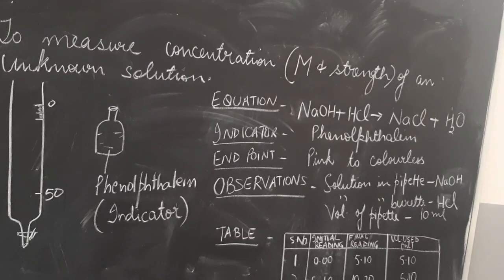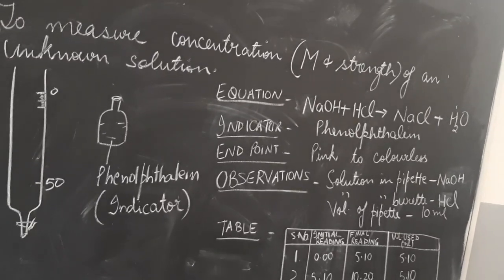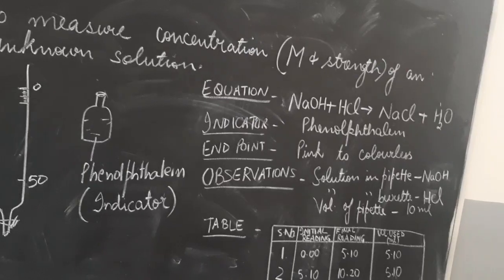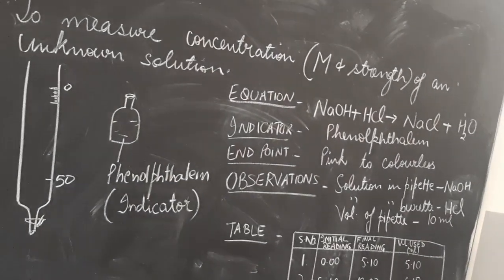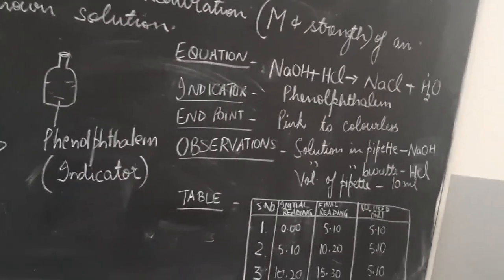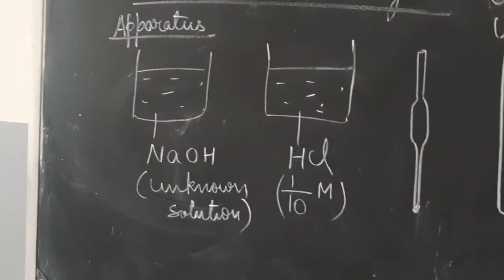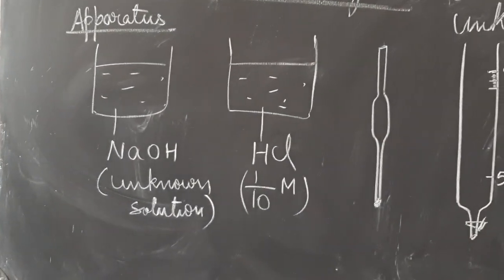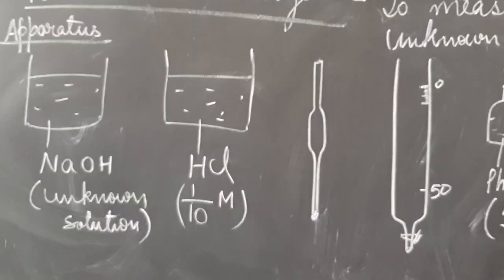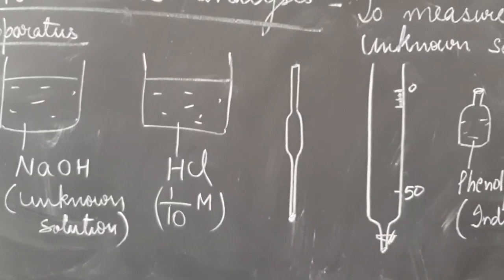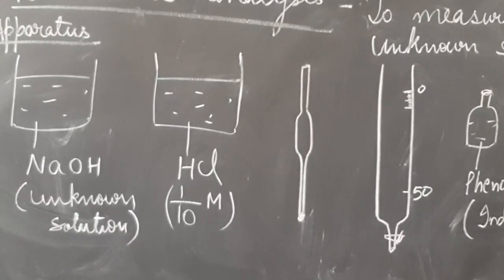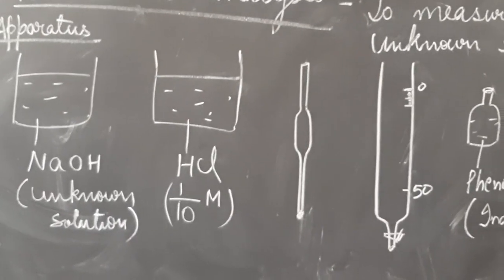The aim of today's experiment is to measure the concentration — that is, the molarity and strength — of an unknown solution. The specific aim of our experiment will be to determine the concentration of the unknown sodium hydroxide solution provided, using M/10 HCl solution.